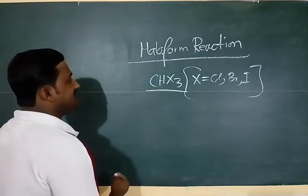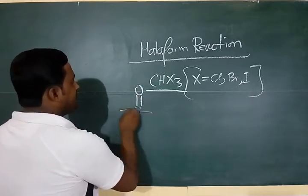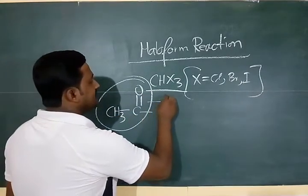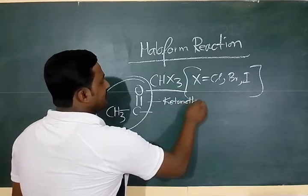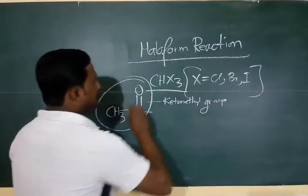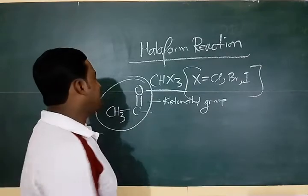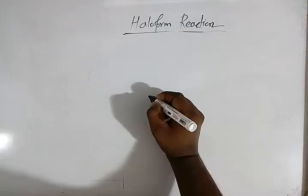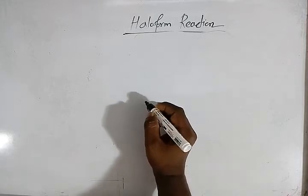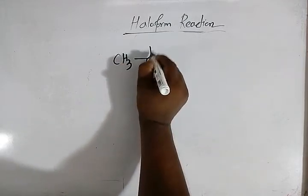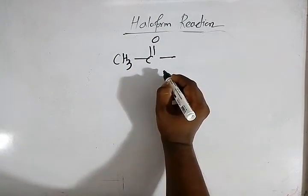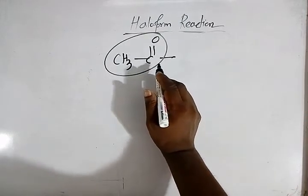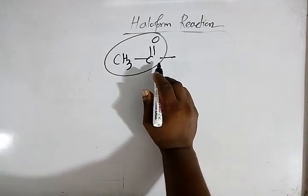Haloform reaction is generally possible for all the compounds which have CH3CO group. This group is called ketomethyl group. All the compounds which have ketomethyl group have the tendency to respond to haloform reaction. So in haloform reaction, the reactants are generally aldehydes and ketones having ketomethyl group, and there are certain alcohols which on oxidation will produce aldehydes and ketones having this ketomethyl group and they will respond to haloform reaction.